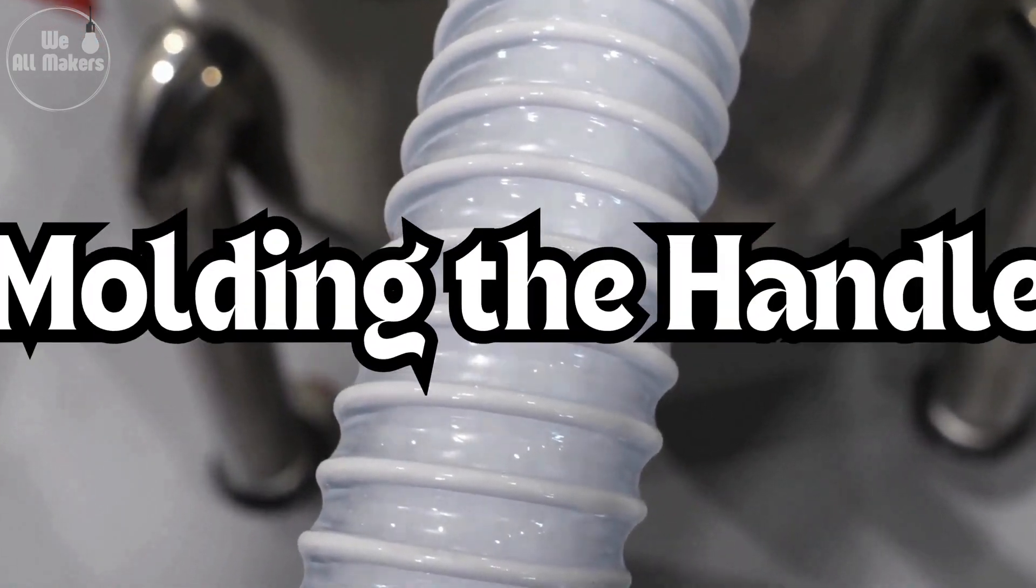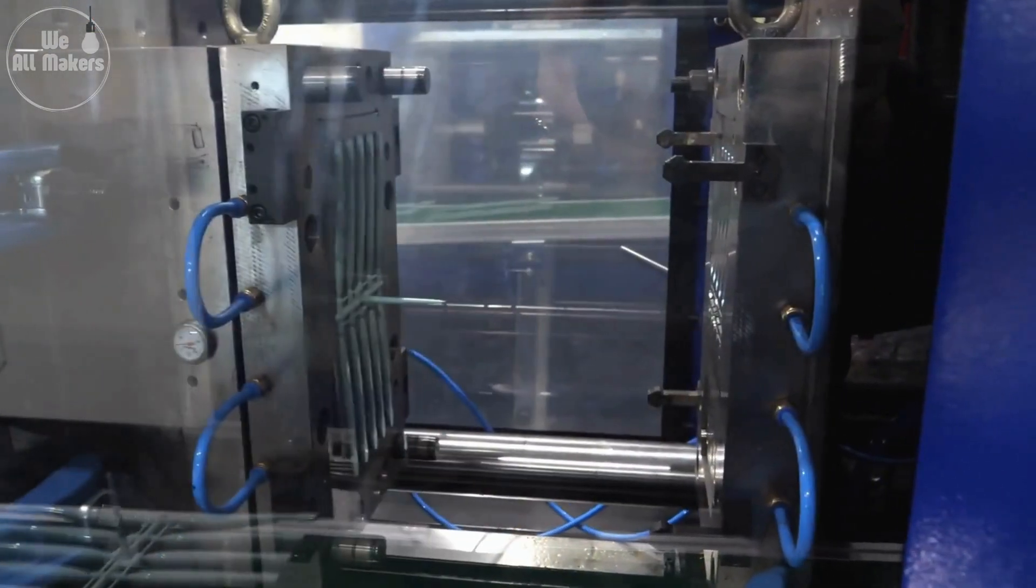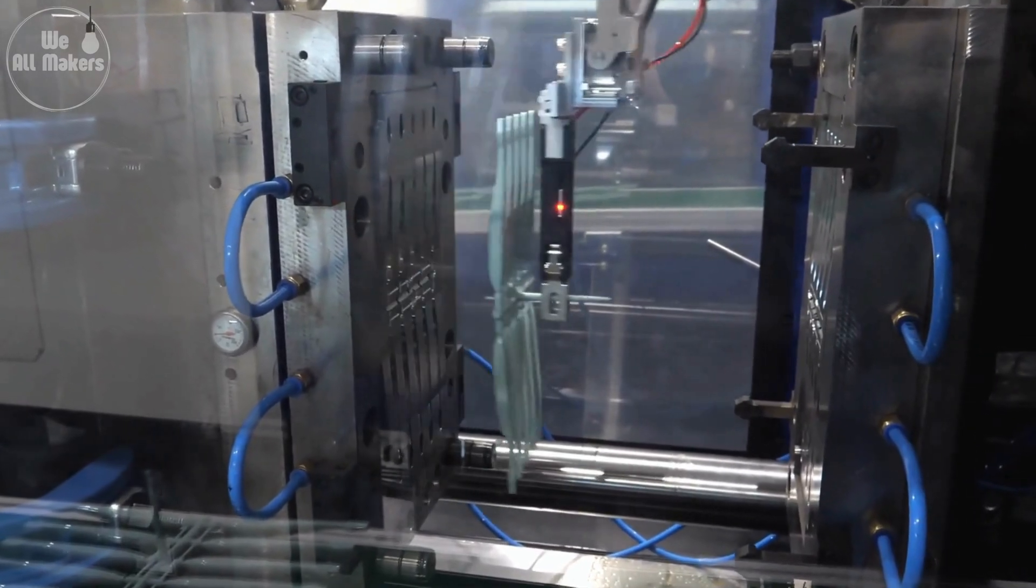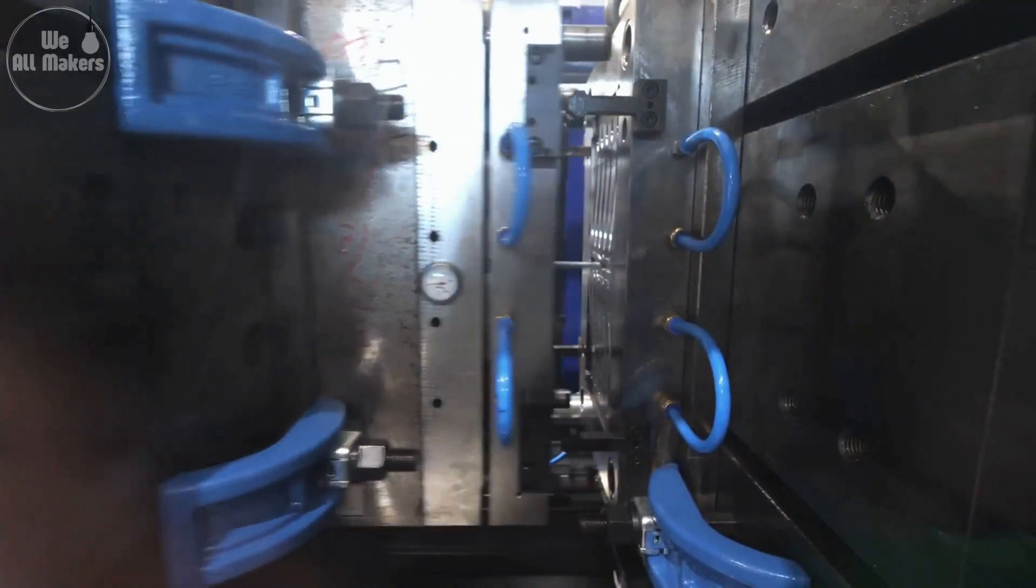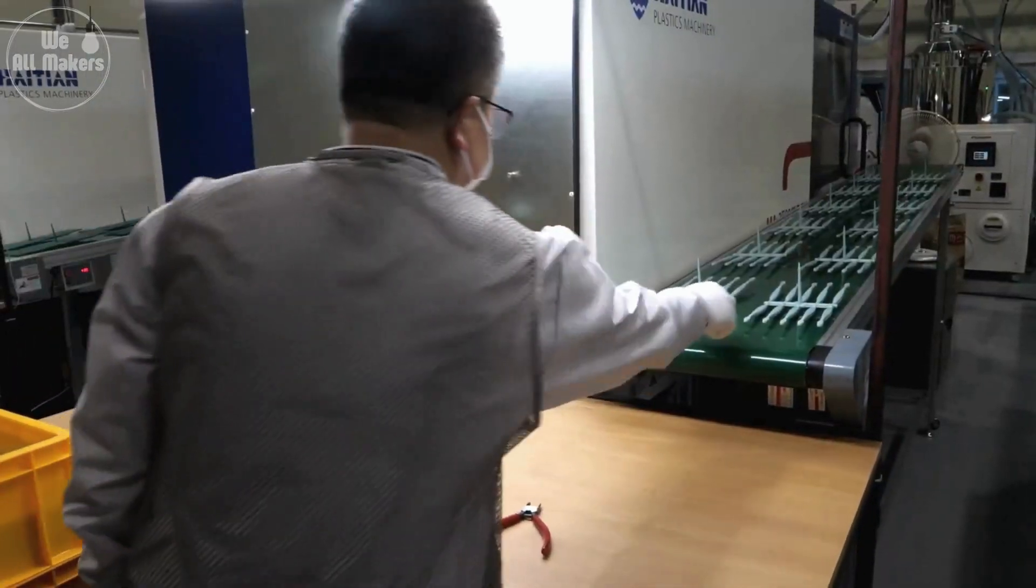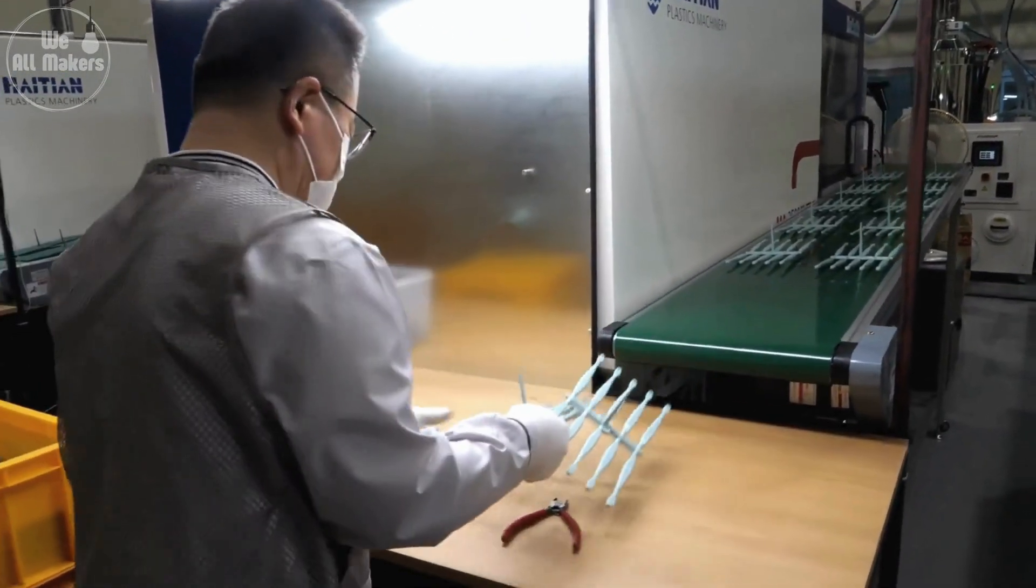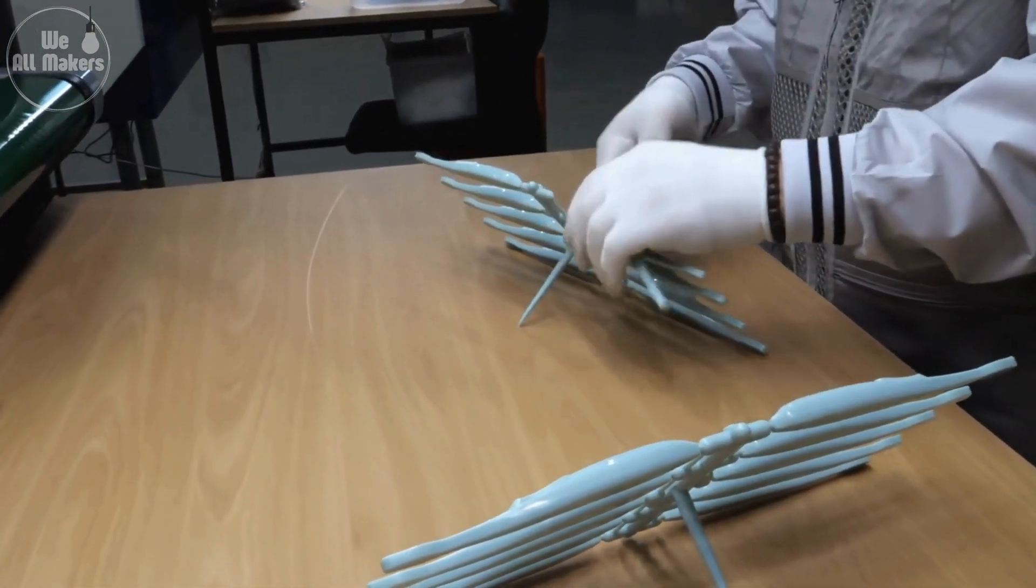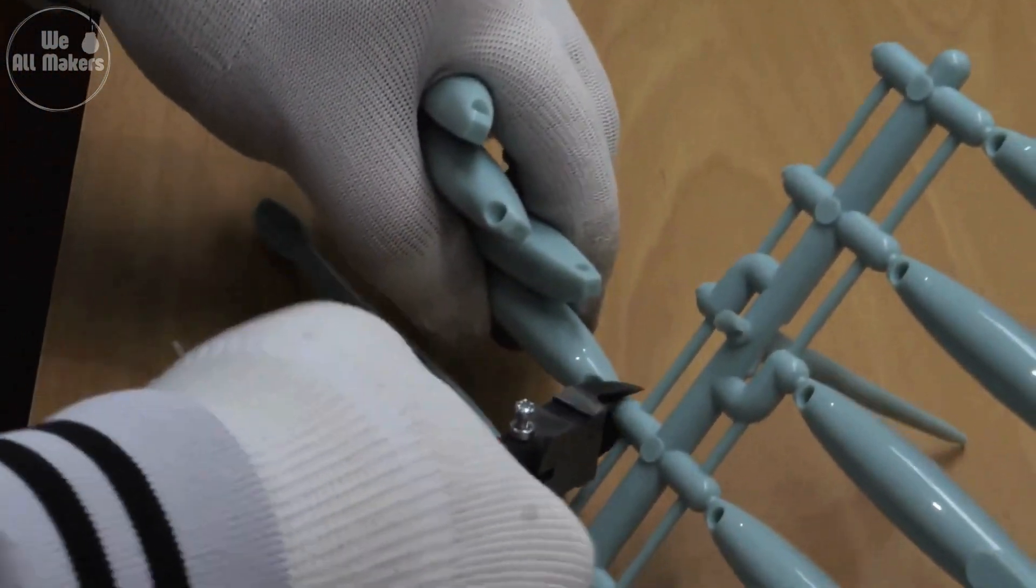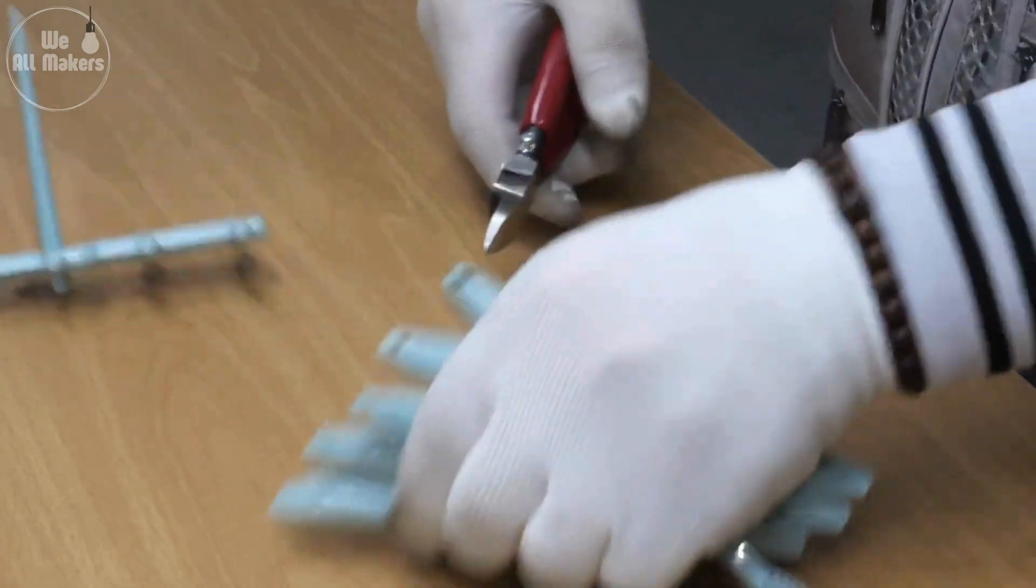Step 2: Molding the handle. The molten plastic is then injected into molds that give the toothbrush handle its shape. Imagine pouring liquid into a mold and watching it cool down to create the perfect shape every time. This is where the toothbrush starts to look familiar. It's quick, precise, and amazing to see how the same mold can produce thousands of identical handles.